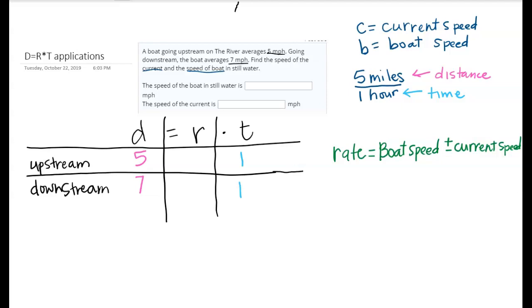If that's what our rate is made up of, let's think about this. With upstream, I'm going against the current and that's actually going to be slowing me down from how fast the boat would actually be able to go in still water. So on this one I would be saying B minus C because whatever the boat speed is I'm going to minus off what the current is.